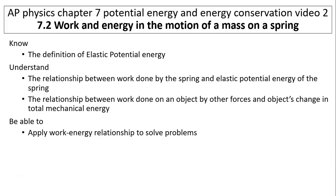Hi, this is Mrs. LaBarbara. This is AP Physics Chapter 7, Potential Energy and Energy Conservation, Video 2. Today's topic is work and energy in the motion of a mass on a spring. The objectives are: know the definition of elastic potential energy, understand the relationship between work done by the spring and elastic potential energy of the spring, and understand the relationship between work done on an object by other forces and the object's changing total mechanical energy.